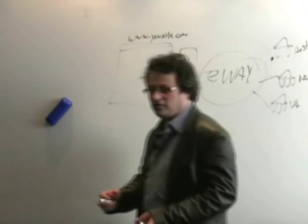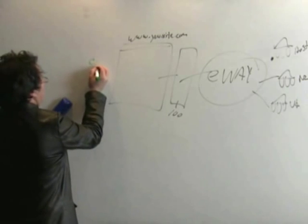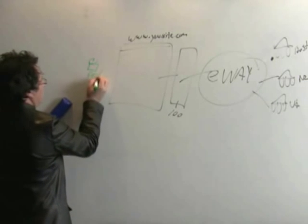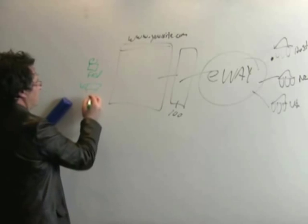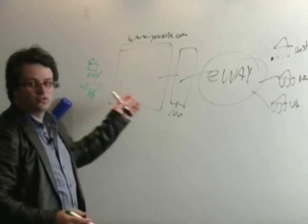So let's have a look at how a transaction would work. This is your website. We've got a guy over here. His name's Fred. Fred just happens to have a Visa card and he's got some money on that card. He's looking at your website.